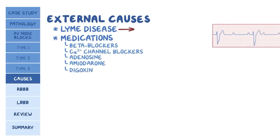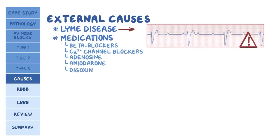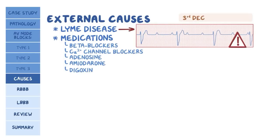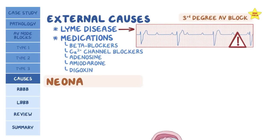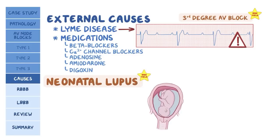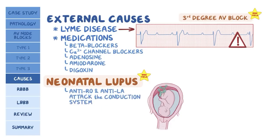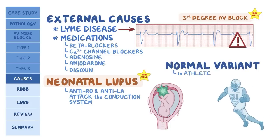For your exams, remember that Lyme disease is typically associated with third-degree AV block. Congenital heart block is a complication of neonatal lupus, which could also show up on your exam. Here, the maternal autoantibodies — called anti-Ro and anti-La antibodies — cross the placenta and attack the conduction system. AV block may also be a normal variant in some circumstances, like in athletes.